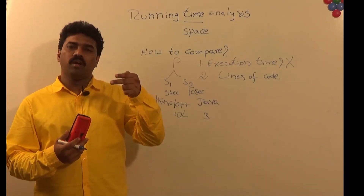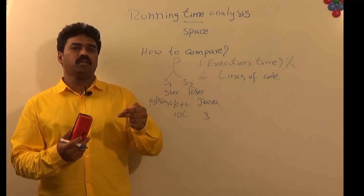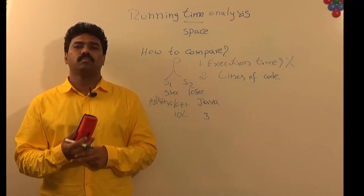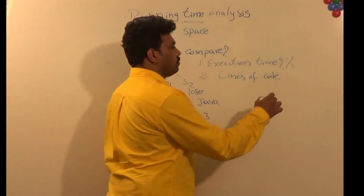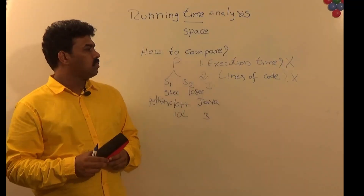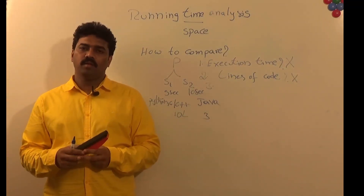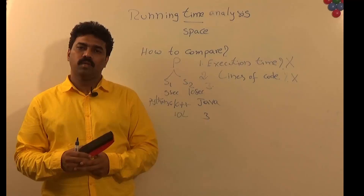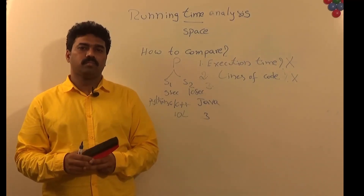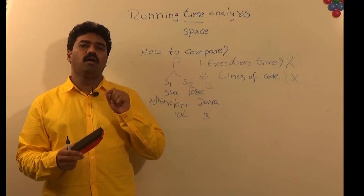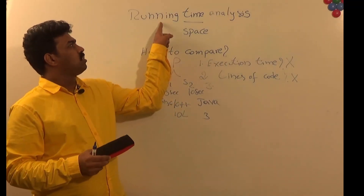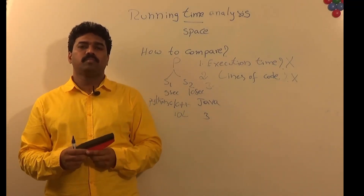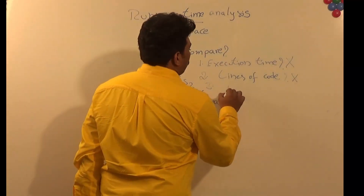When comparing two algorithms, the comparison should be independent of the configuration and independent of the programming language or any other parameters except the input. We need a parameter that is independent of execution time, lines of code, and programming language. Running time analysis is the behavior of the algorithm in terms of input, and that we call the rate of growth.